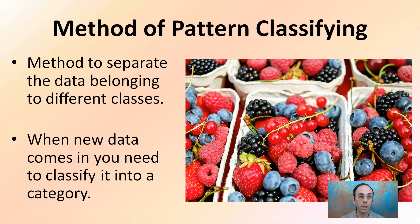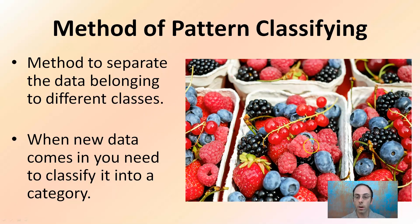Methods of pattern classification — we can separate data belonging to different classes. When new data comes in, we need to classify it into a category. So if we're looking at red versus blue fruits versus black fruits, if we have another strawberry come in, that's going to be red. If we have a red apple come in, we're going to classify that and put it in a separate class.